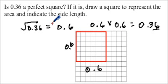So we determined if it was a perfect square by finding a rational number. It was its square root. And we were able to draw the square to represent the area. So the area in here represents 0.36 or 36 hundredths.